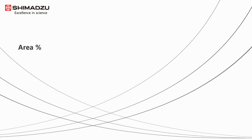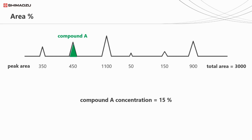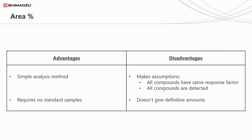Let's start by looking at the most simple way: area percent. Area percent is simply the area that your compound peak equates to relative to the total area of all peaks in the sample. In this example, compound A has a peak area of 450, and the total area of all peaks in the chromatogram is 3000, resulting in a reported concentration for compound A of 15% of the sample. However, this method has some pretty big pitfalls — it assumes that all compounds have the same response factor, and that all compounds in your sample are detected. The advantage is that it doesn't require any standards, but its biggest disadvantage is that it doesn't give definitive amounts.